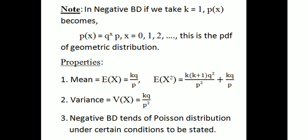In the negative binomial distribution, when we take K equal to 1, P(X) becomes Q^X × P, which is the geometric distribution. So when K equals 1 in the negative binomial distribution, we get P(X) = Q^X × P, where X = 0, 1, 2, 3, which is the PDF of the geometric distribution.